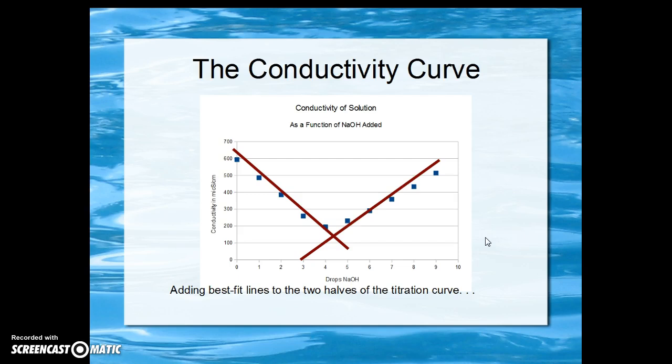Best fit lines added to the two halves of the titration curve show in fact that we have two linear functions that are colliding here around four and a half drops of sodium hydroxide.